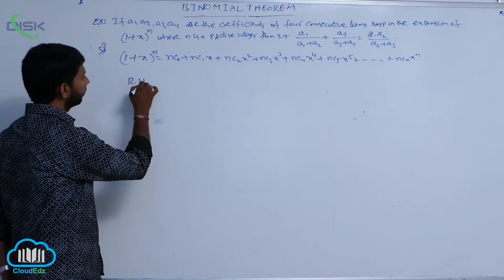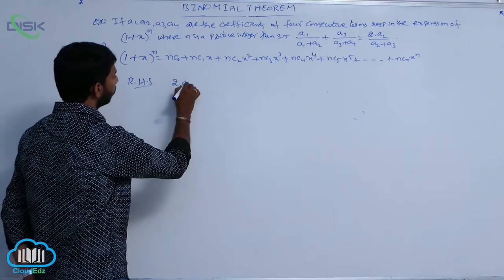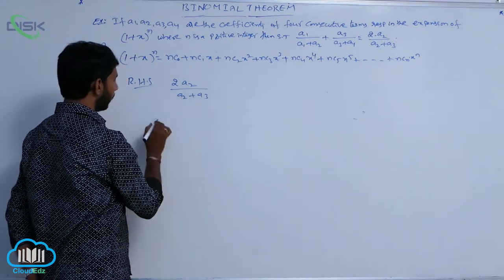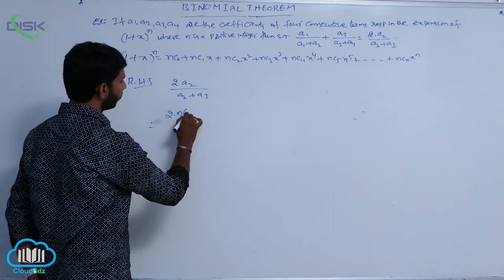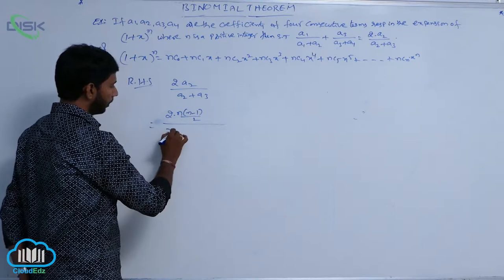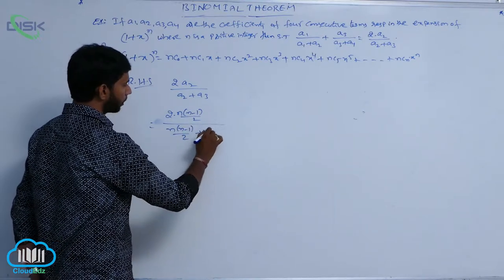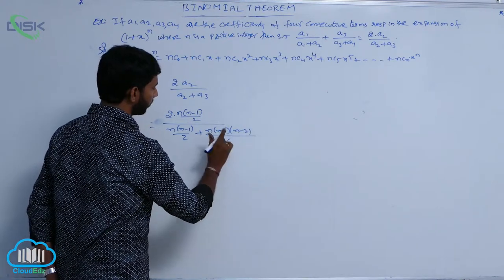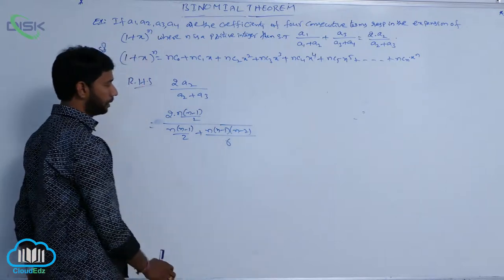Next, go to RHS. Here RHS is 2A2 by A2 plus A3. Substituting the values, A2 means NC2, that is N(N-1)/2, divided by N(N-1)/2 plus NC3, which is N(2N-1)(N-2)/6.